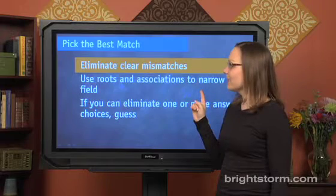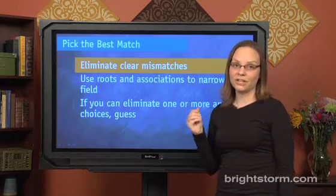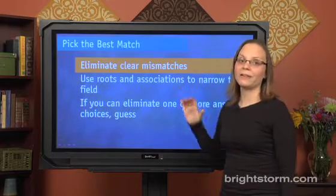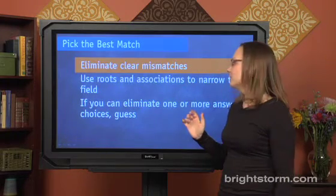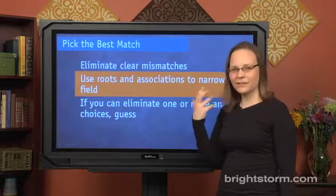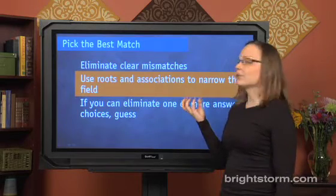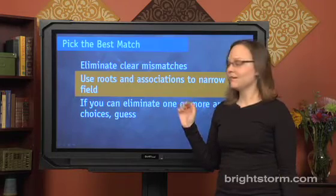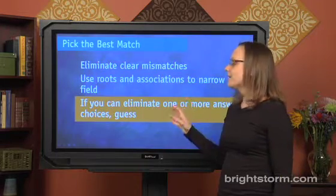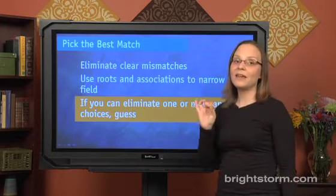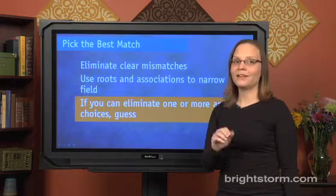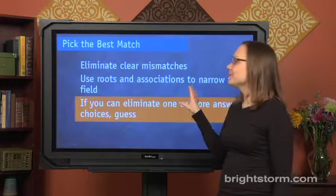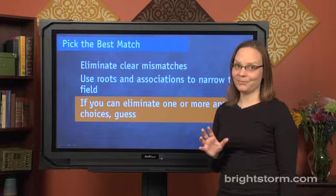When you pick the best match, here are the concepts you're going to use. First, eliminate clear mismatches among the answer choices. You're also going to use roots and other associations you might have to narrow the field after you've eliminated the clear mismatches. And lastly, keep in mind: if you can eliminate one, or better yet more, answer choices, you should always be sure to guess. Now let's look at this applied to a whole bunch of practice SAT problems.